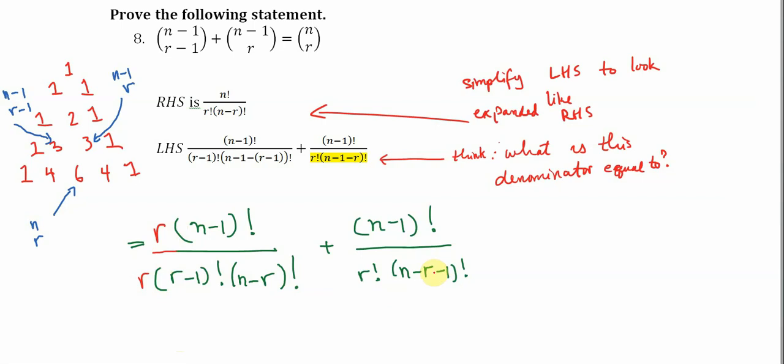n minus r factorial, and I'm going to write a side note here, n minus r factorial is the same thing as n minus r times n minus r minus one factorial. So if we treat n minus r as like our number,